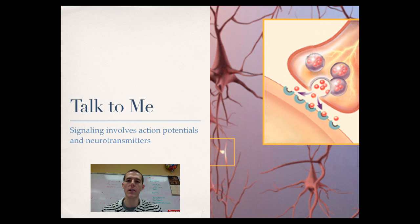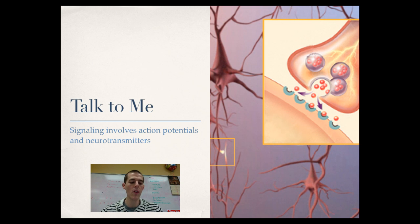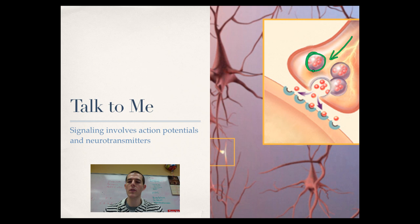We talked about action potentials — that electrical signal flying down the axon causing it to depolarize and repolarize in a sequential manner. When that action potential hits the end of the line at the end of the axon at the synaptic cleft, it signals vesicles. Those vesicles have neurotransmitters inside of them. Neurotransmitters are different chemicals that cause a response in another cell, whatever cell they are targeting. The action potential races down the line, signals those vesicles, and tells them to fuse with the membrane. When they fuse with the membrane, they dump their neurotransmitters into the cleft.